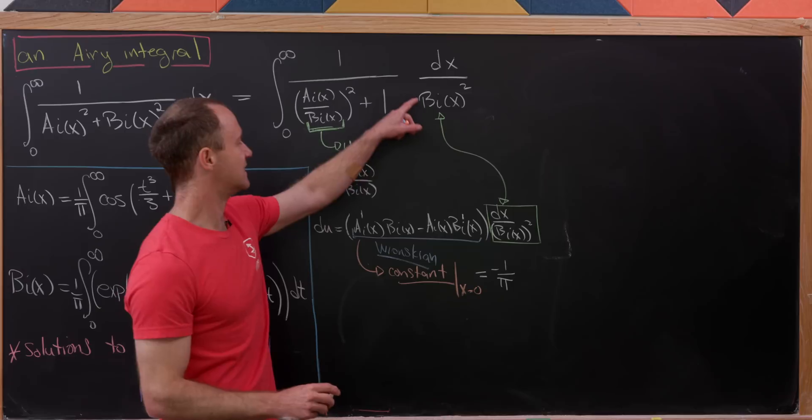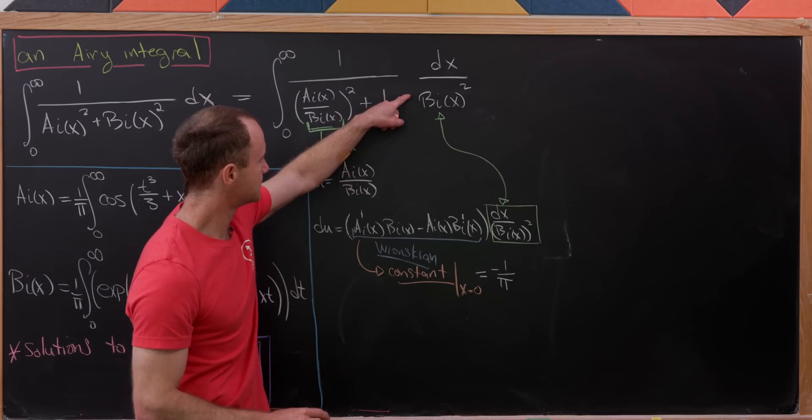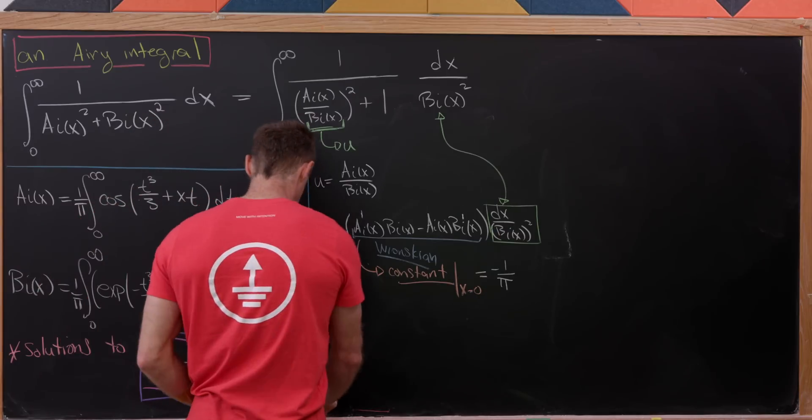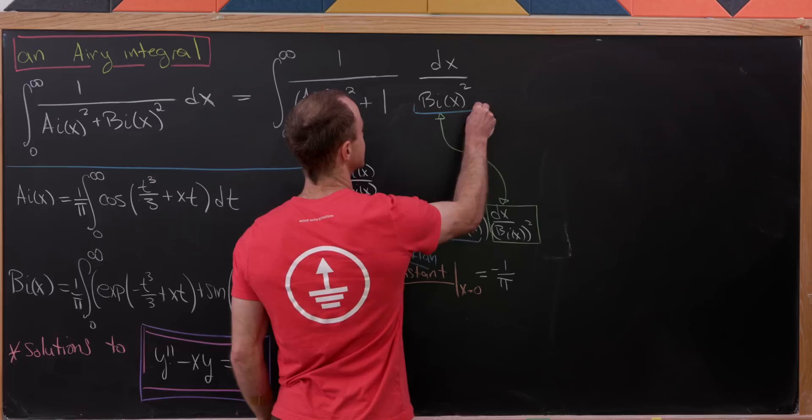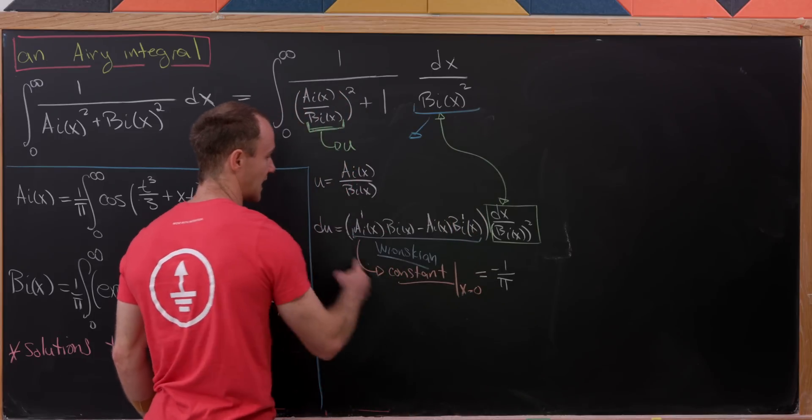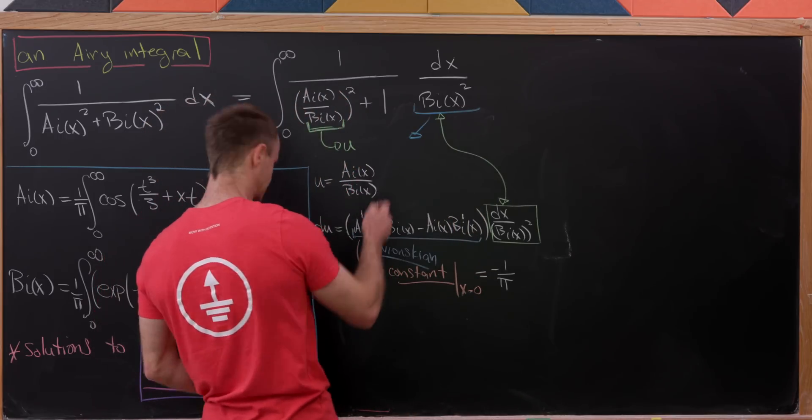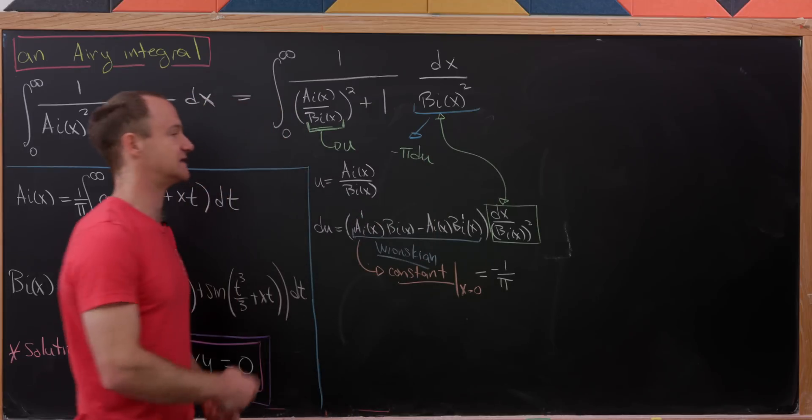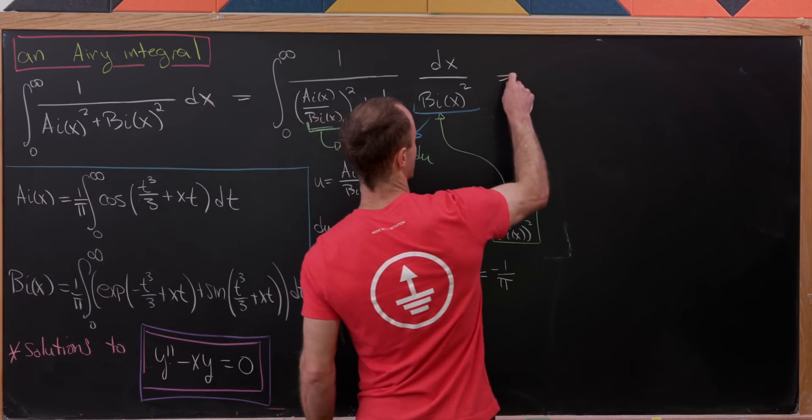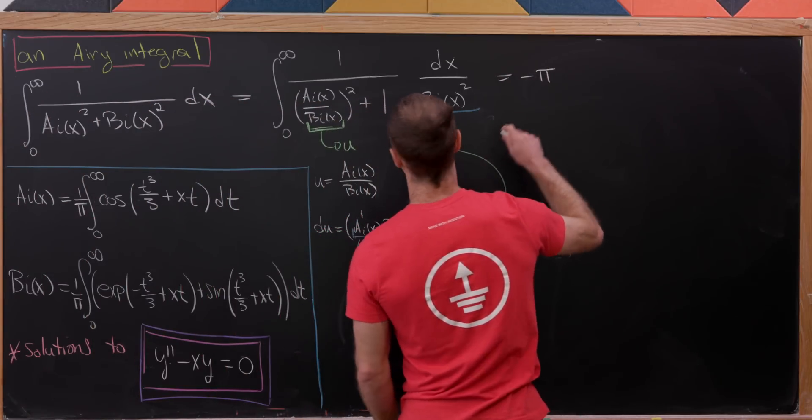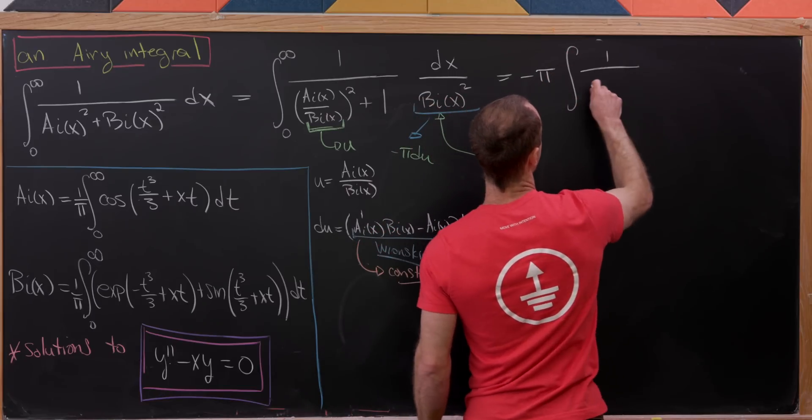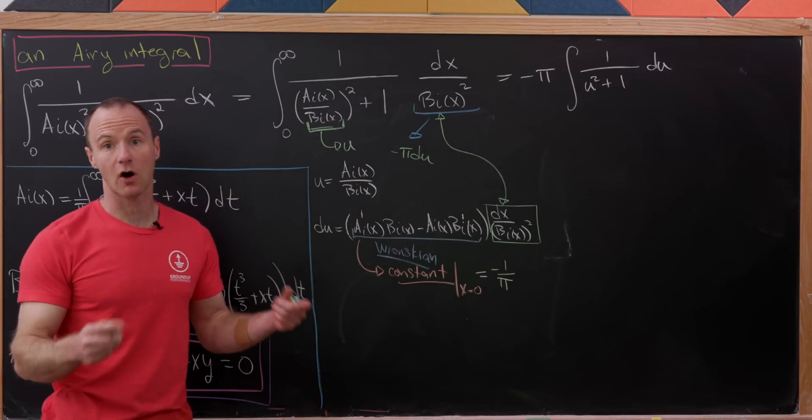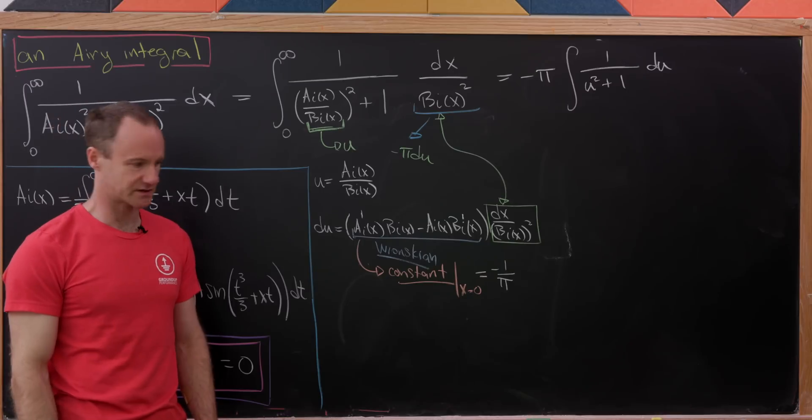But now let's notice that this thing right here is not exactly this dx over BI squared. This whole thing right here can be replaced with, if we can multiply this minus 1 over pi over, and we'll see that it is exactly minus pi times du. So let's see what we have. This is going to be minus pi, and then we'll have the integral of 1 over u squared plus 1 du, which I think we can all agree is a little bit more friendly than what we started with.